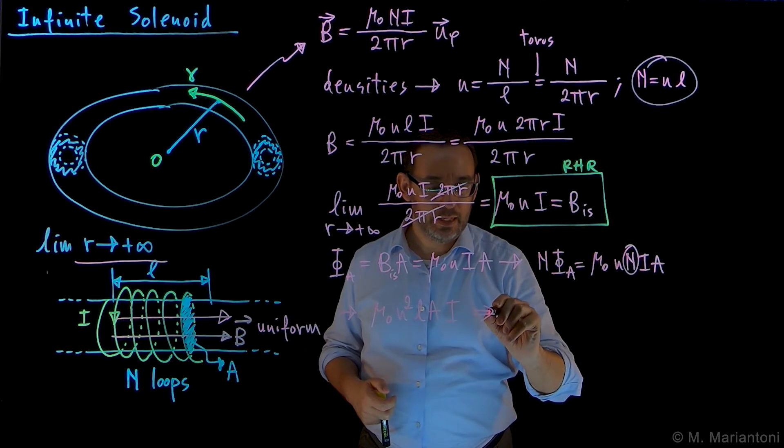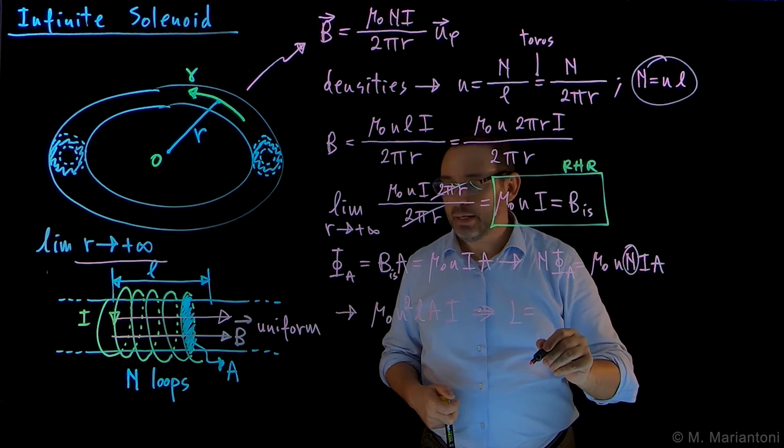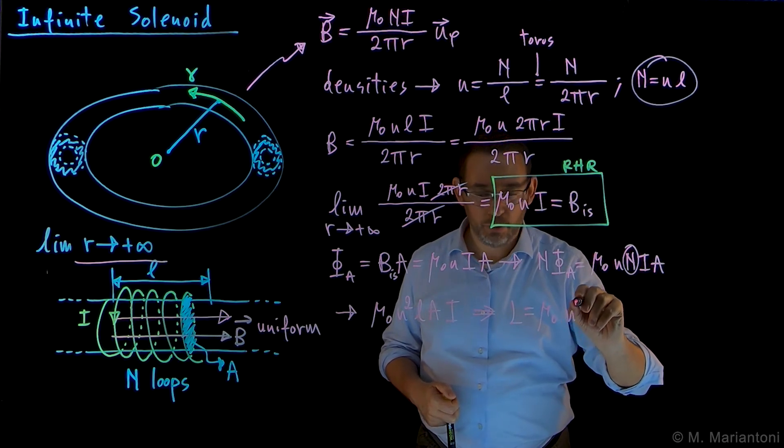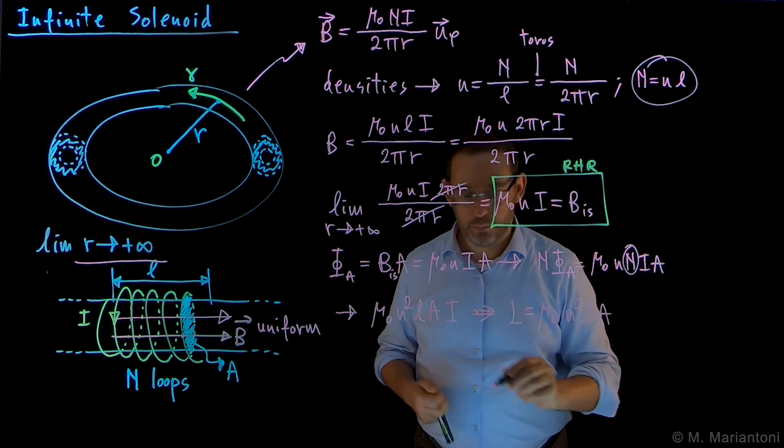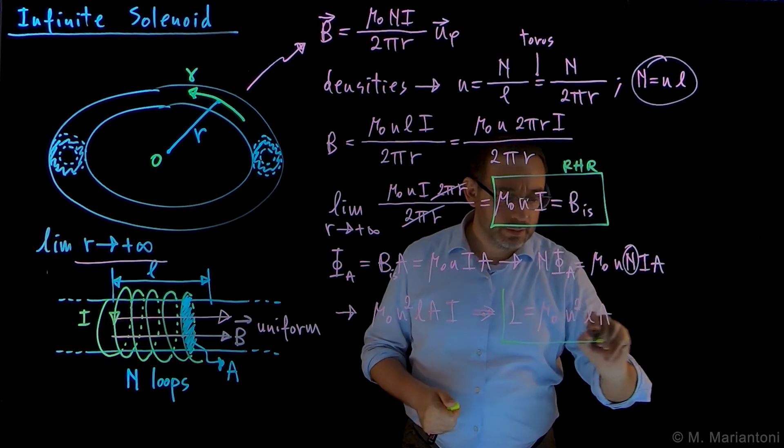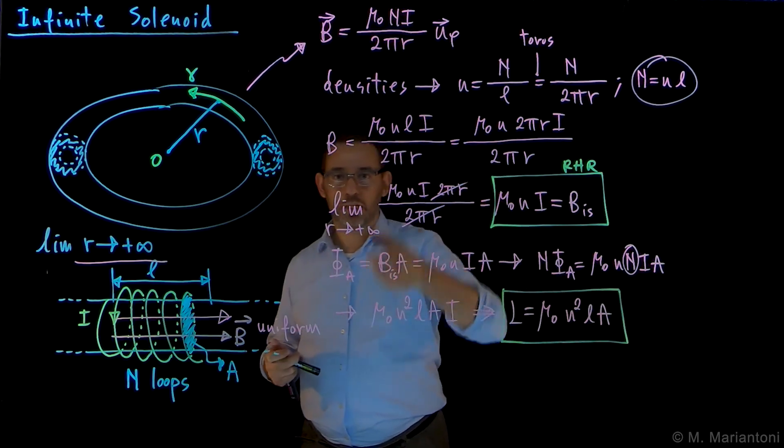And finally, the self-inductance is equal to the flux divided by the current, so we divide by this current, and we obtain mu_0 n squared L A. And so this is our final result here, the self-inductance of the infinite solenoid, which again is the equation I use to compute the inductance of the coil in my AM radio.